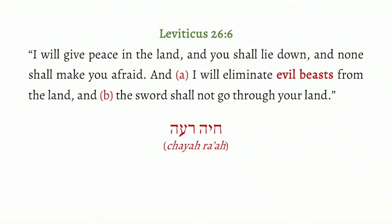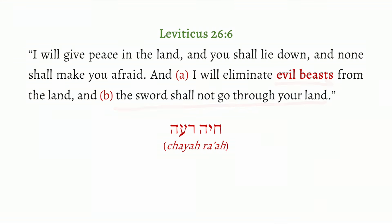So follow along with me in a passage from Leviticus 26:6, where God promises that when the land is settled and His kingdom is established, He says, 'I will give peace in the land and you shall lie down and none shall make you afraid.' Then there are two things He says He will accomplish: 'I will eliminate evil beasts from the land,' and secondly, 'the sword shall not go through your land.'